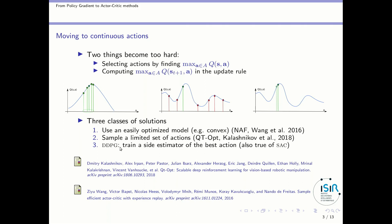DDPG does something a little different: it trains a side estimator to find the best action. This side estimator is the actor. The idea is that the actor will provide an estimate of a good action, and you will improve this actor so it gives a better and better estimate of the max action.